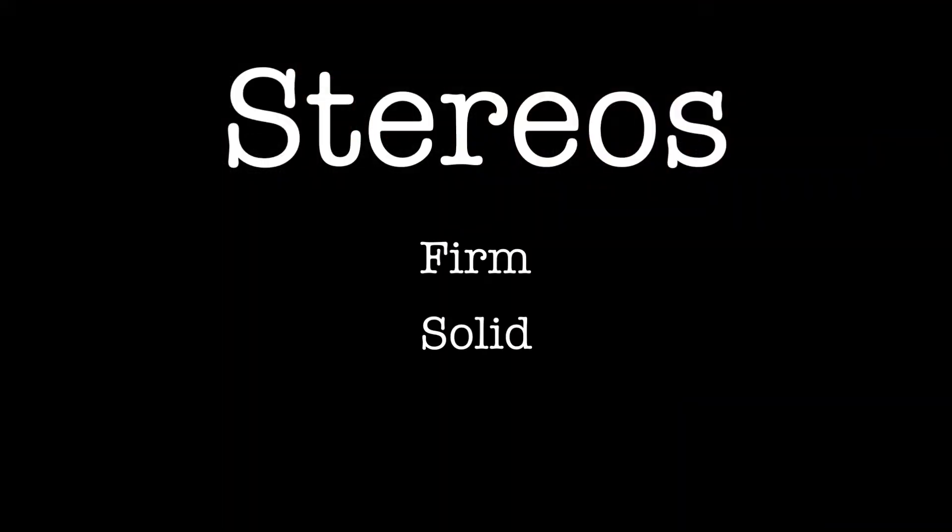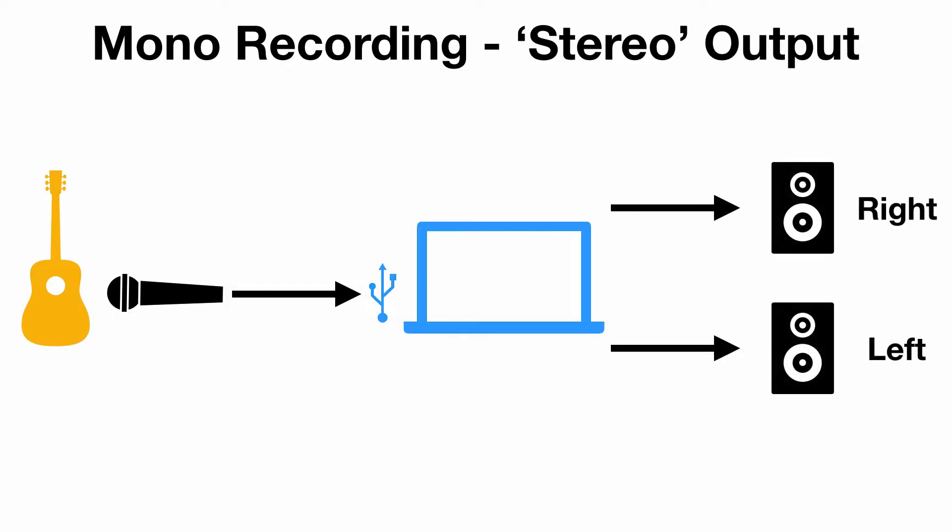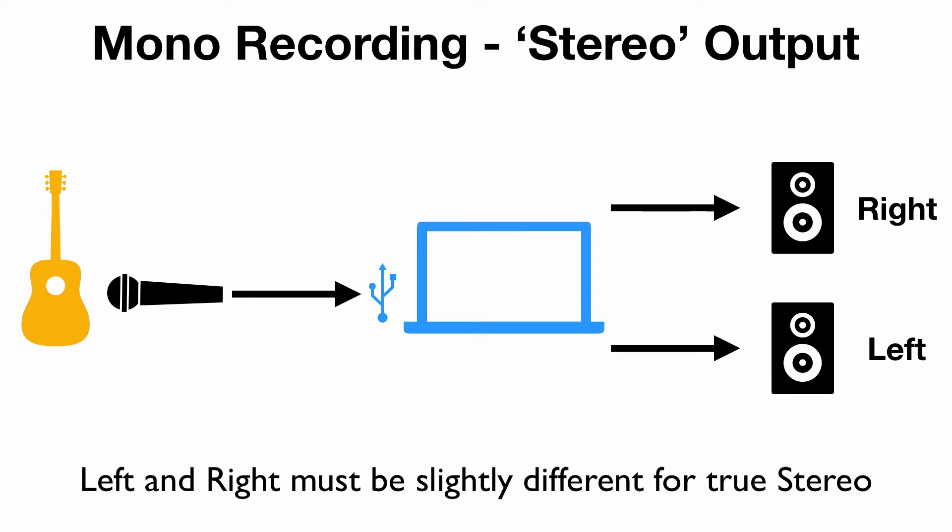However, this recording still isn't in stereo because both speakers are putting out the exact same signal. So how is stereo recording any different? Stereo comes from the Greek word 'stereos,' which means firm and solid, and has come to be described as three-dimensional. In audio, stereo is most commonly referred to as having two channels with the same source audio. The key difference in stereo is the differences between these two channels.